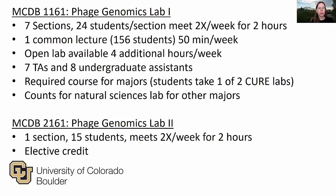For the second semester, the PHAGE genomics bioinformatics part, we have one section with usually around 15 students, and we meet twice a week for two hours. This class is smaller because it's elective credit and it's lower division. We run the PHAGE discovery part of the lab in both the fall and the spring, which we need to do in order to accommodate all the students that need to take that class.